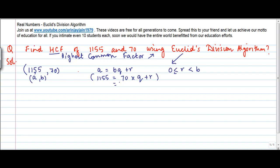70 times 16 plus - so if you do 70 times 16, what will you get? 1120 plus 35.